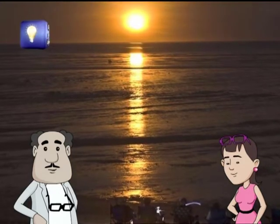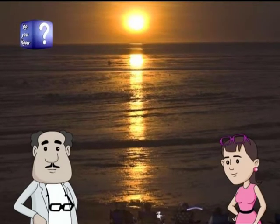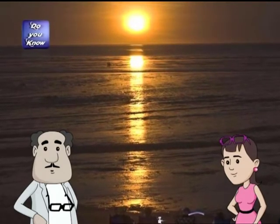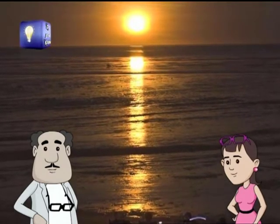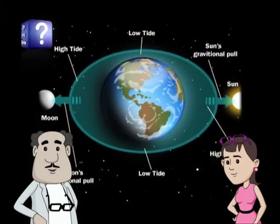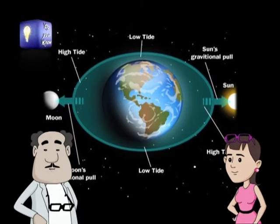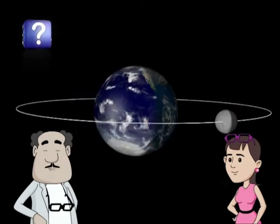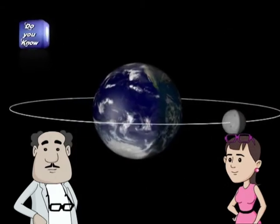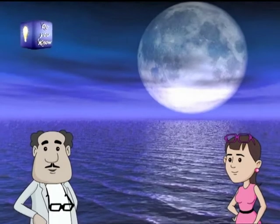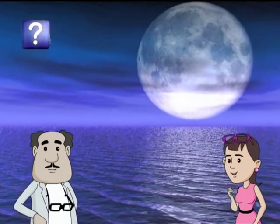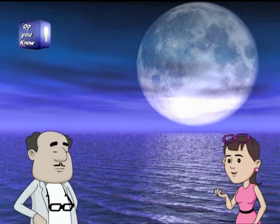But before you blame the moon altogether, you must know that the sun too is helping out in pulling at the earth's oceans. This is why we get very high and low tides from time to time. When the gravity of the moon and the sun line up, we get the biggest and smallest tides. Don't the sun and the moon have an equal pull?